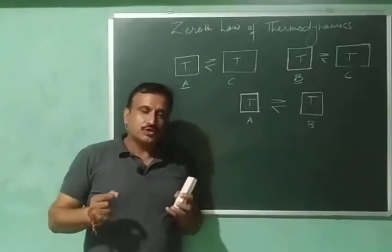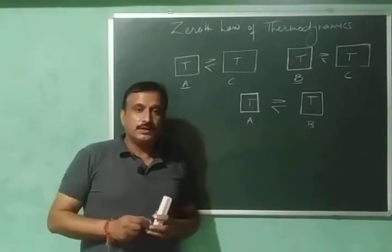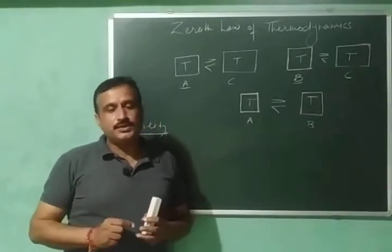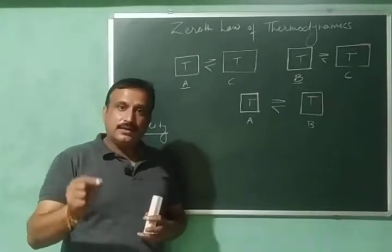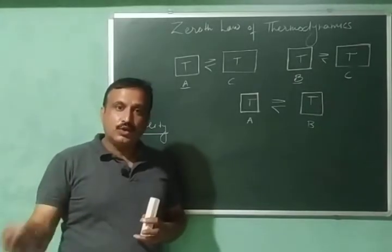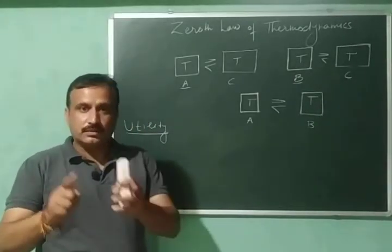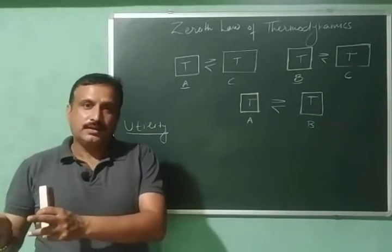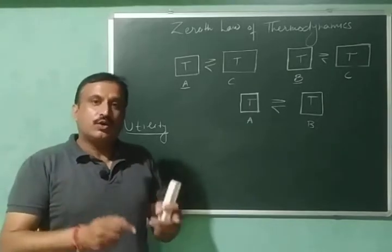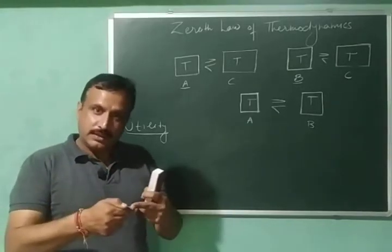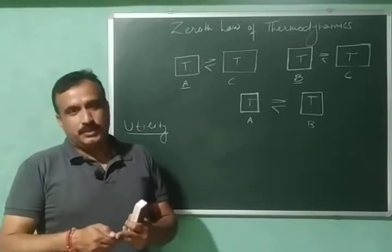According to this law, if two bodies are separately in thermal equilibrium with a third body, then those two bodies are also in thermal equilibrium with each other.